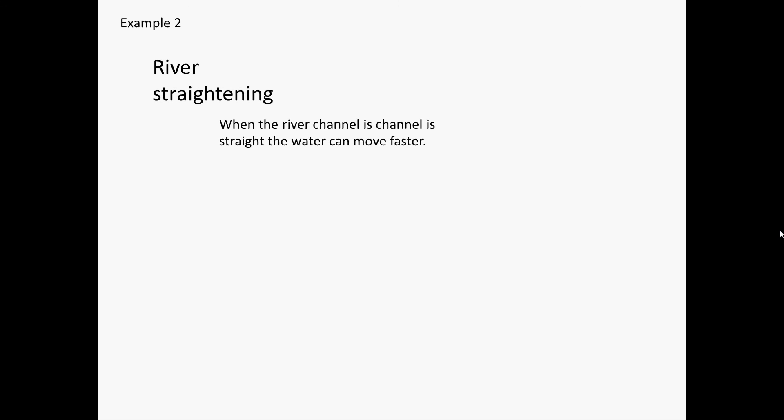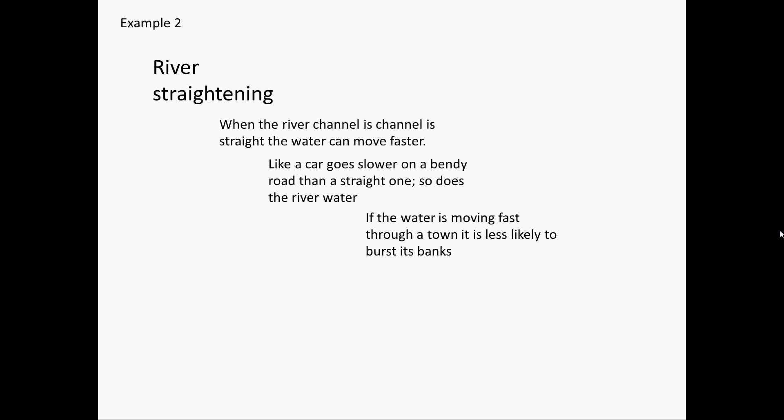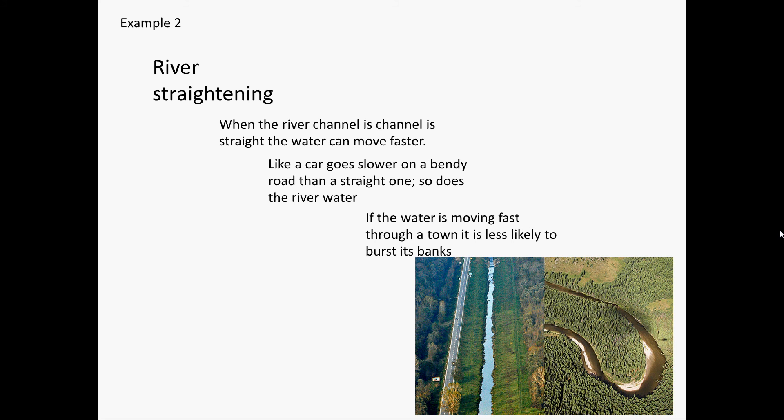A second example is river straightening. This is when a river channel is straightened so the water can move faster — like a car goes slower on a bendy road than it does on a straight one, so does the river water. If the water is moving fast through a town, it's less likely to burst its banks. You can see the difference between the two rivers: the straightened one and the bent one.